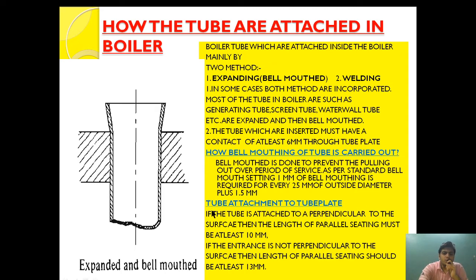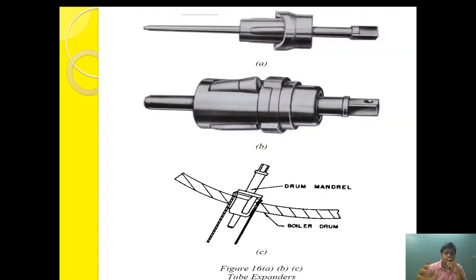For tube attachment to a tube plate: if the tube is attached perpendicular to the surface, the length of the parallel seating must be at least 10 mm. If the entrance is not perpendicular to the surface, then the tube attachment should be at least 30 mm. These are the things we need to keep in mind while expanding the tube.